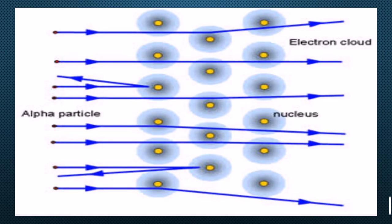When the alpha particle hit the center of the atom, there was a dense and solid thing that deflected the rays back. Some particles were deflected at large angles and some at low angles. Majorly, he used more than 20,000 alpha particles to bombard the gold foil.